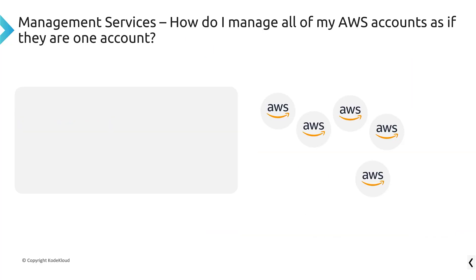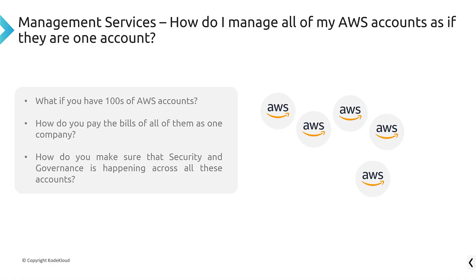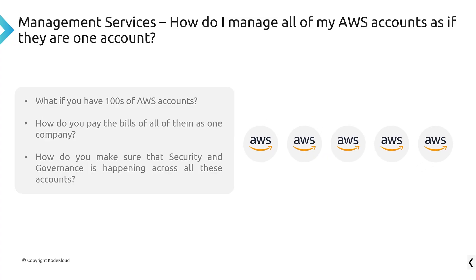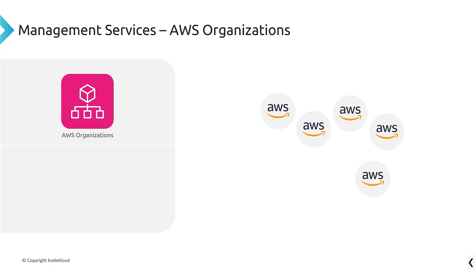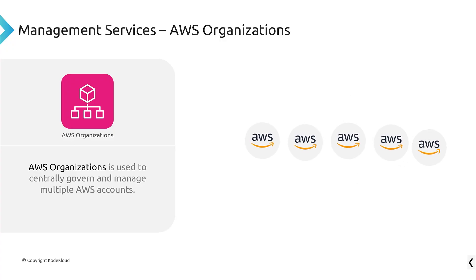Another question: how do I manage all of my AWS accounts as if they're one account? I personally have worked at a business where there were 700-plus AWS accounts. How do you pay for all of that in one view? How do you do security across all those accounts? When you have multiple AWS accounts and you need to manage them en masse, this is what AWS Organizations is used for — to centrally govern and manage multiple AWS accounts.